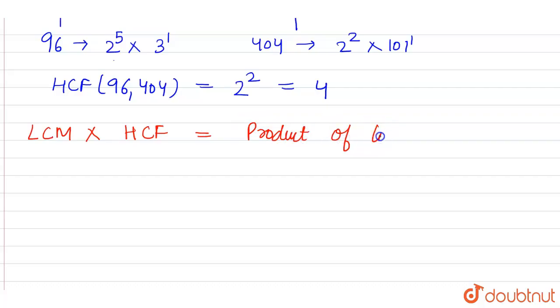So here we have to find the LCM. We have found the HCF, that is 4, and the product of two numbers is 96 into 404. So LCM equals 96 into 404 divided by 4.